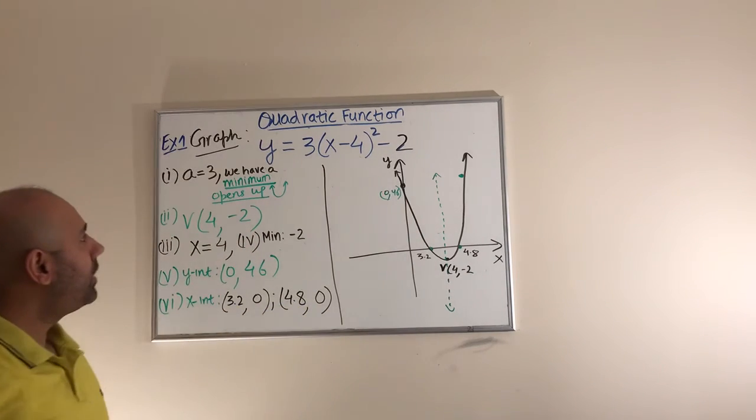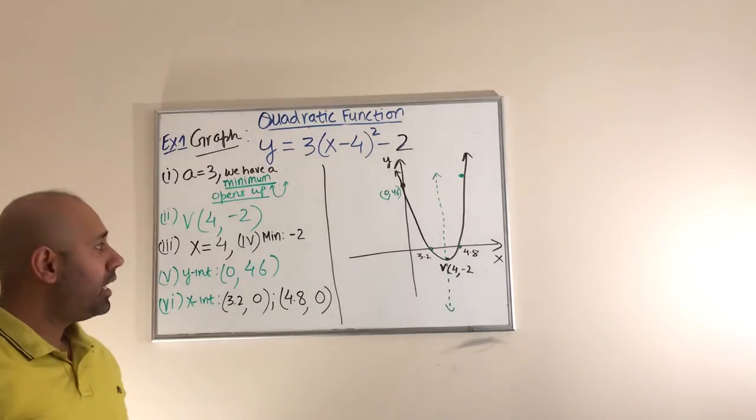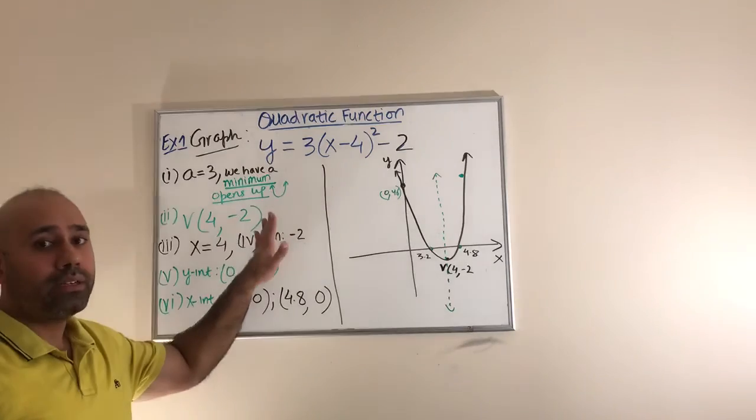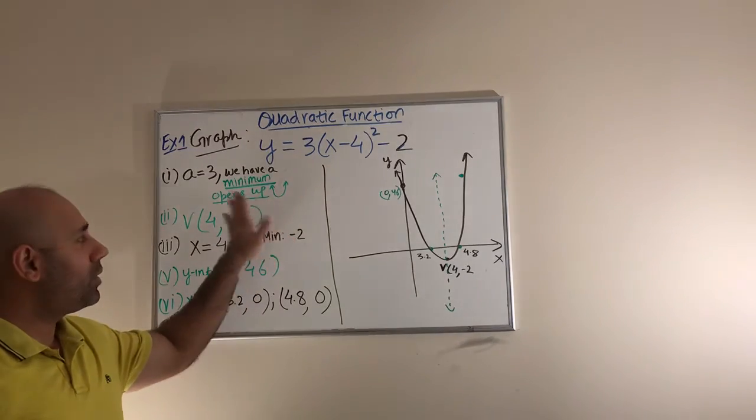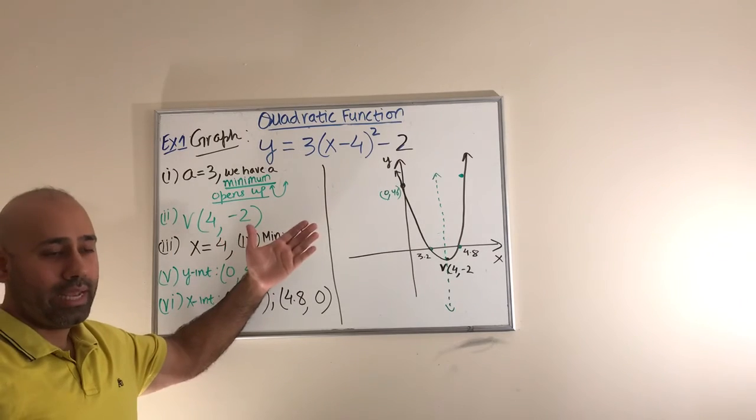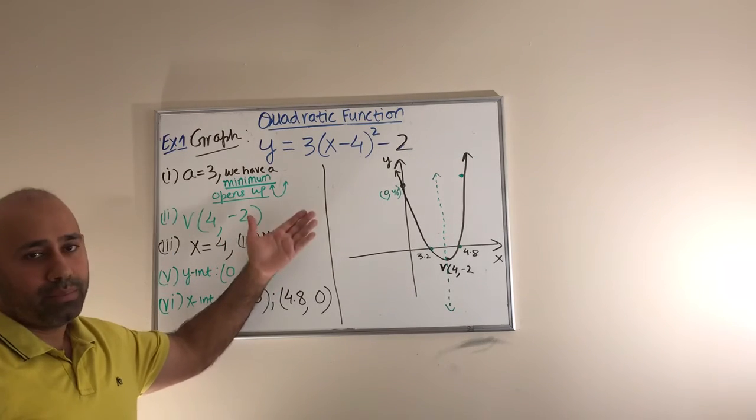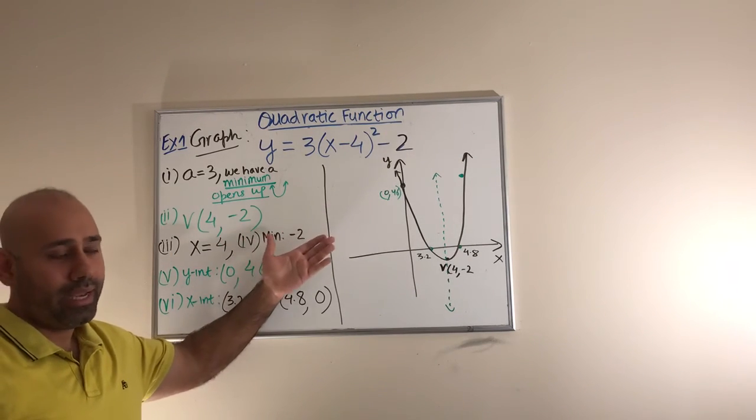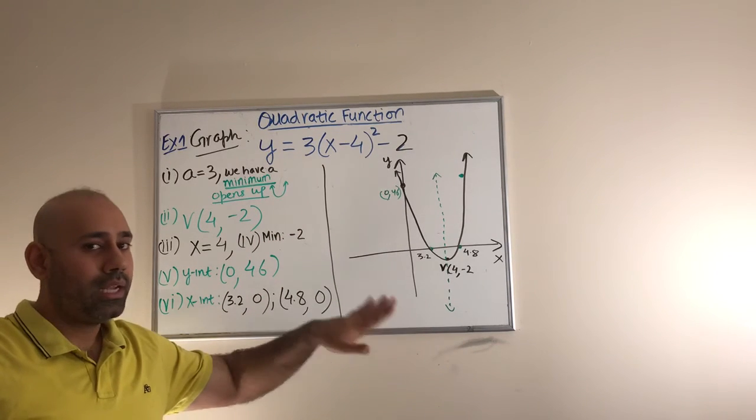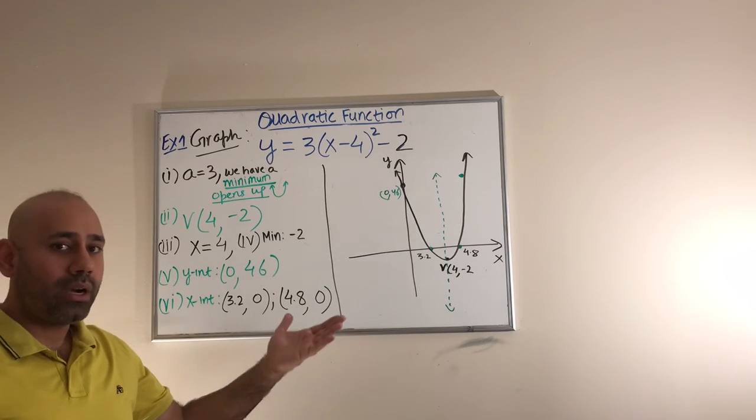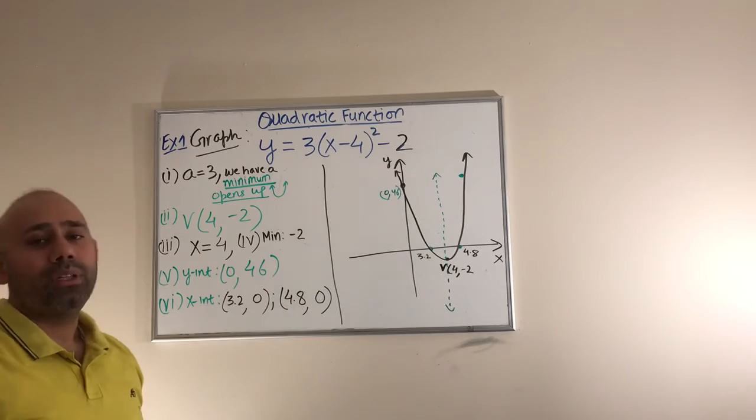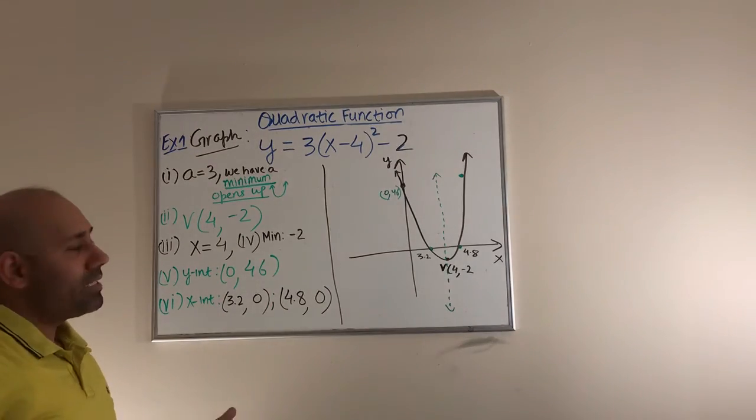Okay, so guys this is how we actually graph a quadratic function. Now if this quadratic function is not in the vertex form, if it is in the standard form, you can still, you still have to do the exact same work. You have to calculate the a which is very easy, you just compare it with the standard form and you can see the a. Then you have to do the work for h and k, and we already have the formulas for h and k. We find h and k, that means we find the coordinates of the vertex. Then we find the y-intercept, x-intercept, and we plot the graph.